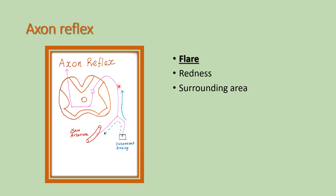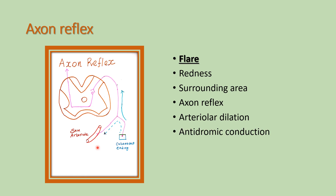Normally, any sensation is carried by the orthodromic reflex to the sensory cortex — through the dorsal column and spinothalamic tract to the sensory cortex. The axon reflex, however, is the antidromic reflex. Normal sensory conduction is the orthodromic reflex, shown as a solid line; the dotted line represents the antidromic conduction — that is the axon reflex.